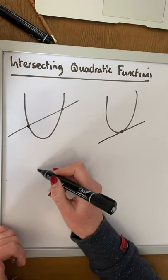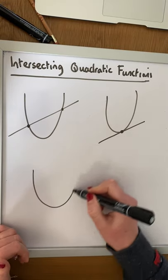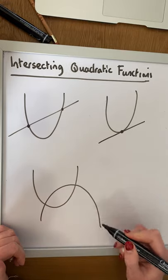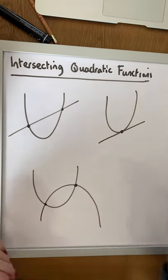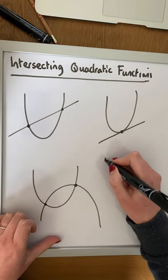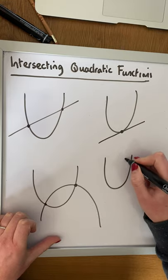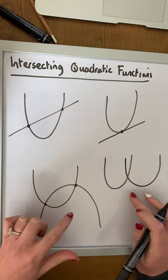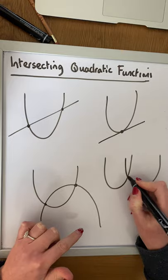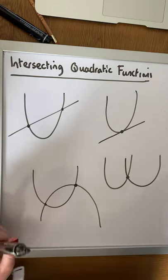We can also have two quadratic functions intersecting, so we may have a positive quadratic and a negative quadratic. That's one example of intersecting points, and we could have two quadratics intersecting, which means that we could only have one point of intersection. It depends.